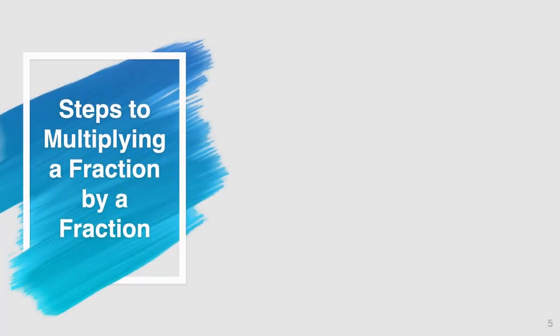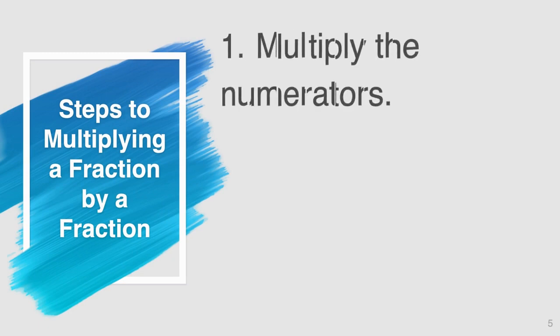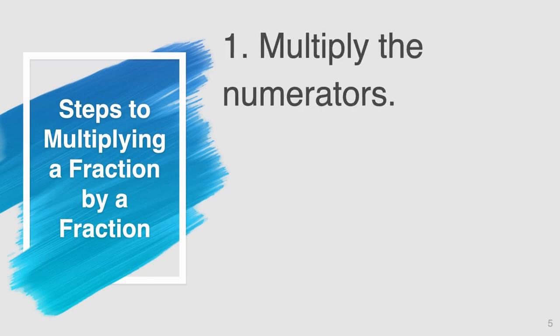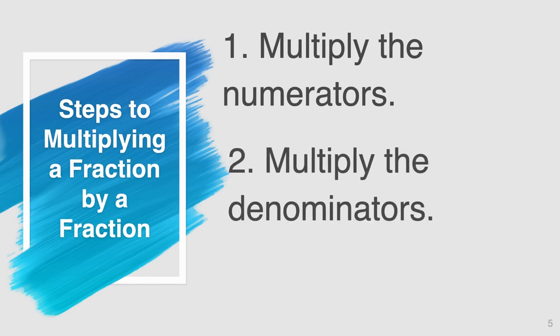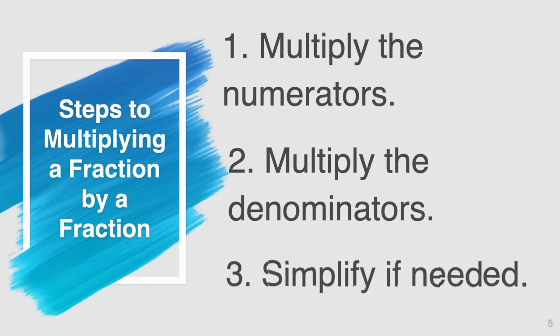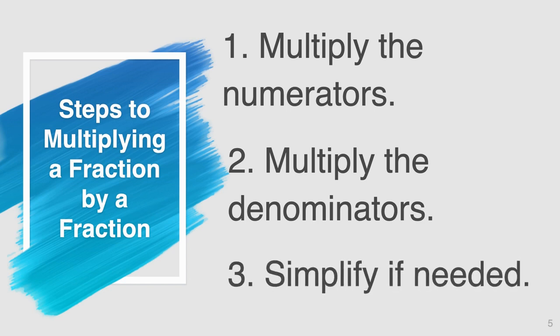When we want to multiply a fraction by a fraction, the first thing we must do is multiply the numerators. After we do that, the second step tells us to multiply the denominators. And the third step is to simplify if needed. That sounds pretty easy, right?